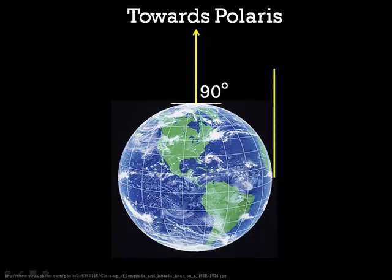If you traveled to the equator and you were looking at Polaris, you would see that Polaris is right on the same line as your horizon, and we would say that that would be a zero degree angle. The lines are running exactly the same. Interestingly enough, the latitude of the equator is zero degrees.